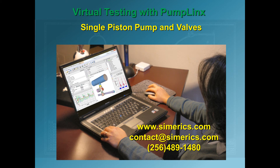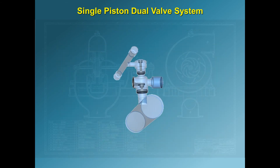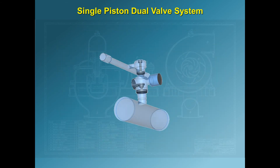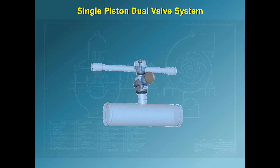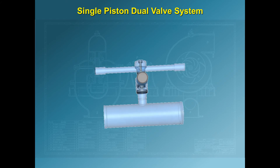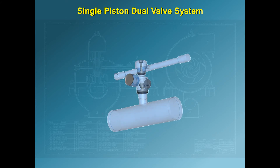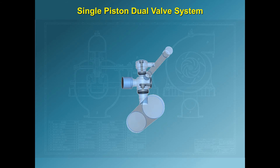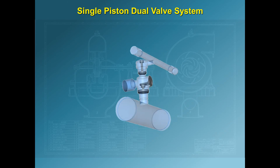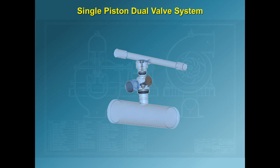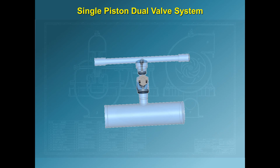Welcome to Sumerics. This presentation demonstrates virtual testing of a single piston pump and valves using the computational fluid dynamics software Pumplinks. This system consists of a single piston moving with a prescribed motion and two valves which open and close in response to the fluid flow. It is part of a multi-stage high pressure pump commonly used in the oil and gas industry.